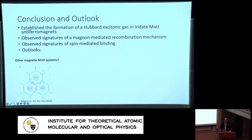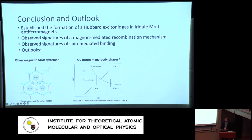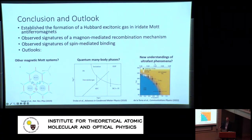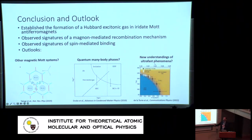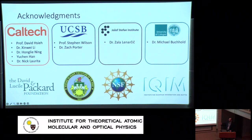In conclusion, we established the formation of an excitonic gas in these iridate Mott antiferromagnets. We observed signatures of a magnon (boson)-mediated recombination mechanism and experimental evidence for spin-mediated binding of holon-doublon pairs. The outlook includes studying excitons in other Mott systems with different magnetic degrees of freedom, and asking whether there is an equivalent many-body phase diagram for Mott excitons — spin-bound excitons and their possible condensed phases. The speaker thanks collaborators at Caltech and other institutions.